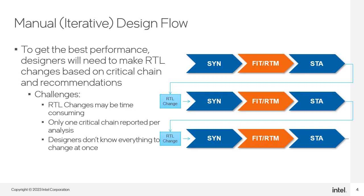When designing for the HyperFlex architecture, to get the maximum performance from the fabric, you may need to make some modifications to your RTL. How many and the extent of the modifications you have to make depends on how your design is coded and your target clock speed. But invariably, it is an iterative process. The challenge is that you don't know exactly all the changes you need to make to meet your target clock speed, and any of those RTL changes may require some time to complete.